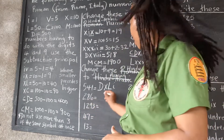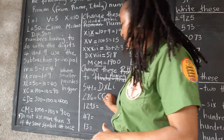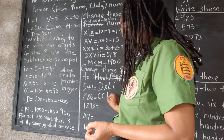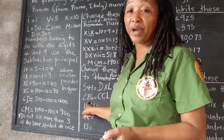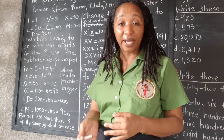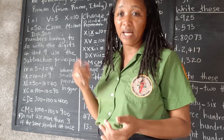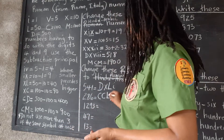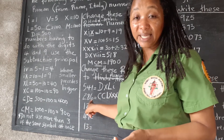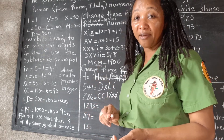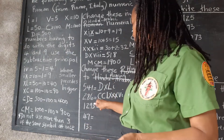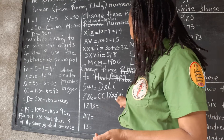For 286: we need two 100s — CC. We need to break up 80 because we don't have a symbol for 80, so we break it into 50 and three 10s — LXXX. Then 6 would be 5 and 1 — VI. So 286 is CCLXXXVI.